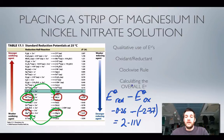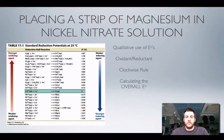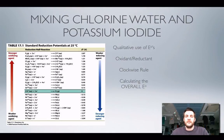Let's quickly see what we'd expect to see. We've got a green solution of nickel ions. The nickel ions are turning into a silvery grey solid whilst this silvery grey solid is turning into colourless ions. So you might not notice the solid forming on the surface of the magnesium, but the green solution would gradually fade to colourless.